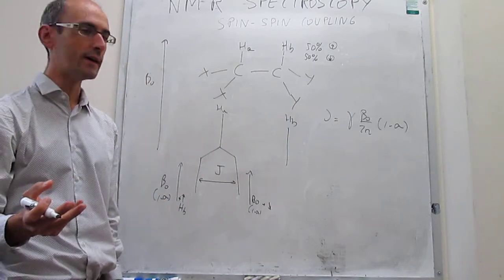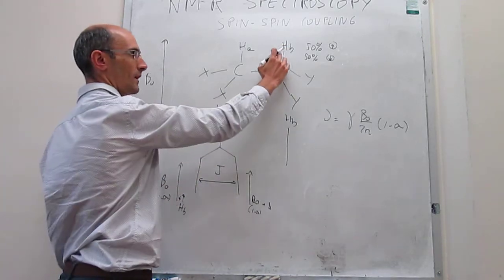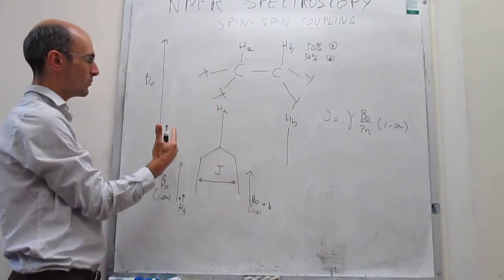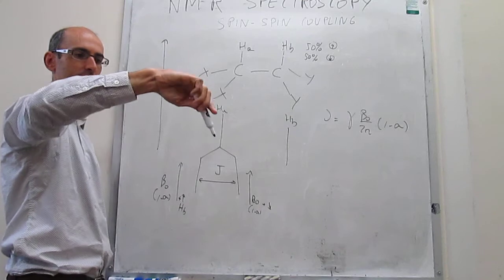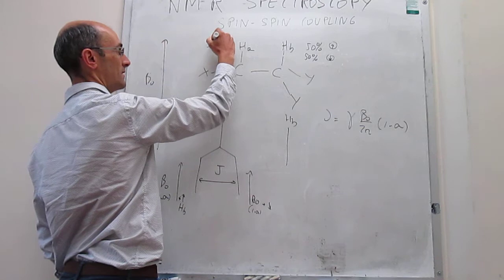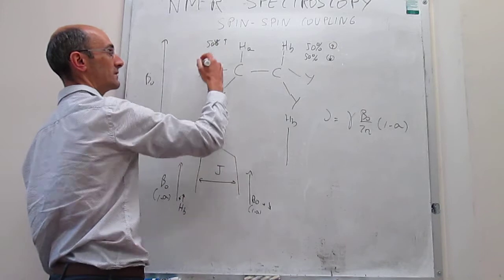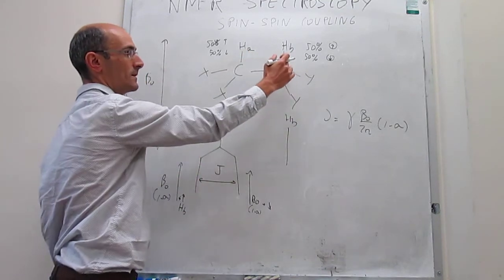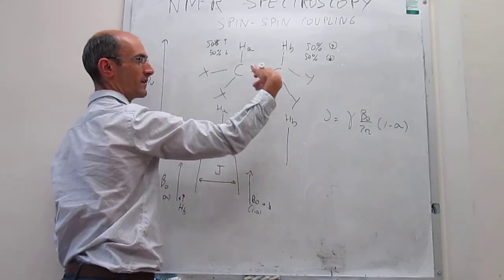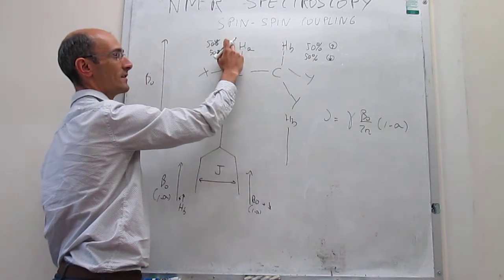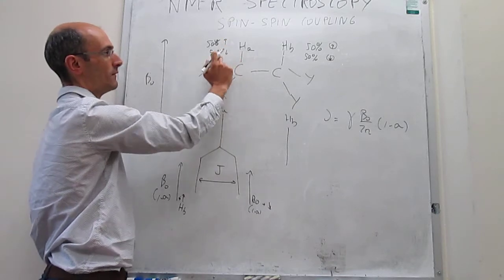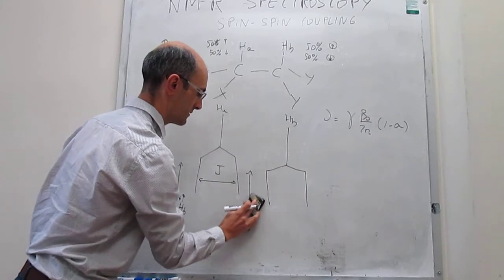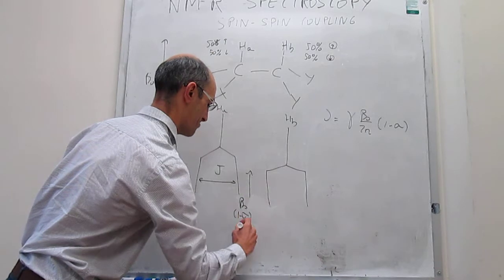Now let's figure out what the signal of HB would be under the effect of HA. What's going to happen is that HA, half of the time, is spinning in such a way that it generates a tiny magnetic field that points towards the external field, and 50% of the time it points against the field. So much as what's happening with HA, when you look at the signal of HB, HB sees the external magnetic field modulated by the electronic currents, and then either a tiny field that is up or down — 50% up, 50% down — so you get exactly the same splitting and HB is also split into two signals.